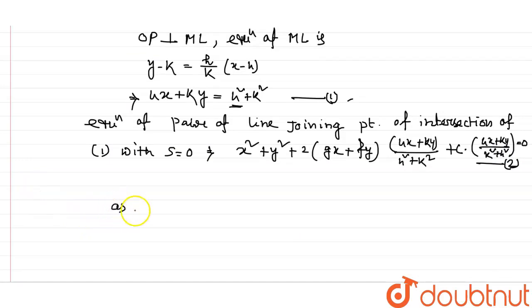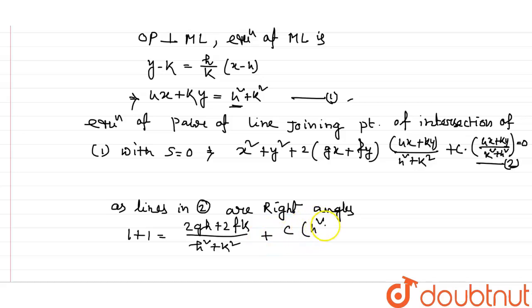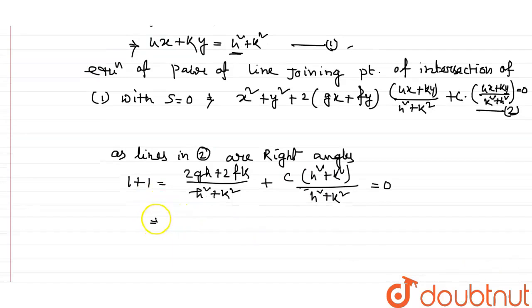As the lines in equation 2 are at right angles, so then 1 plus 1 equals 2GH plus 2FK divided by H square plus K square plus C into H square plus K square divided by H square plus K square equals 0. So if we simplify this equation, you get H square plus K square plus GH plus FK plus C by 2 equals 0.